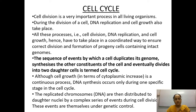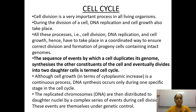There is a sequence of events by which a cell duplicates its genome, synthesizes other cell constituents, and eventually divides into two daughter cells. This sequence is known as the cell cycle. Although cell growth in terms of cytoplasmic increase is a continuous process.